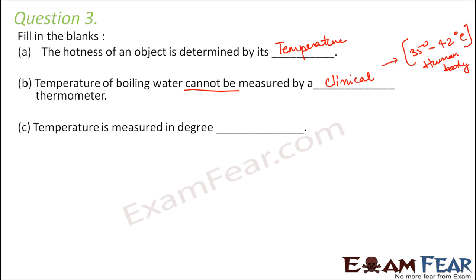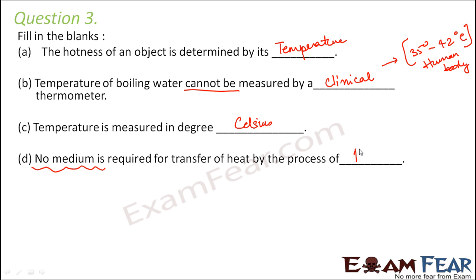Temperature is measured in degrees—which is the most commonly used scale of temperature? The most commonly used one is degree Celsius. No medium is required for transfer of heat by the process of—so just throw the ball in the air, so that was radiation.